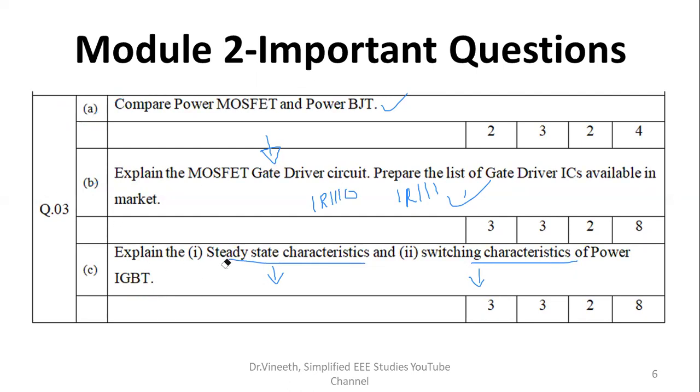These are the few questions. Whenever you are drawing the characteristics, try to mention the axis clearly. And the characteristics also should be very much proper and what should be the inference. And in the steady state characteristics, you can calculate the dynamic resistance, trans conductance, etc.